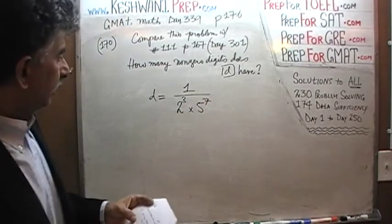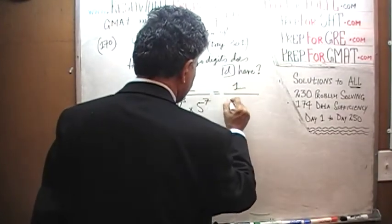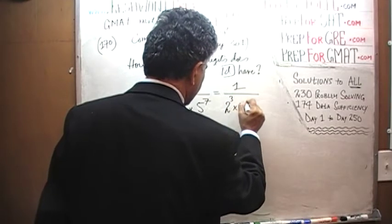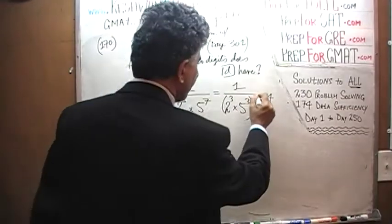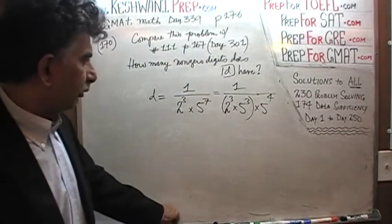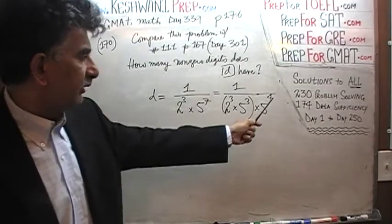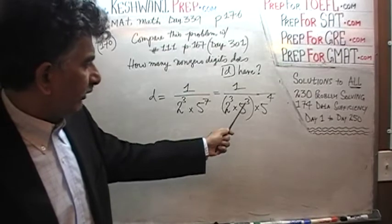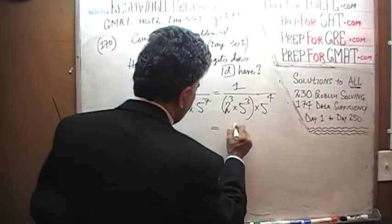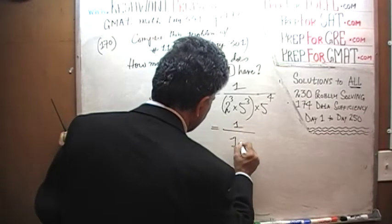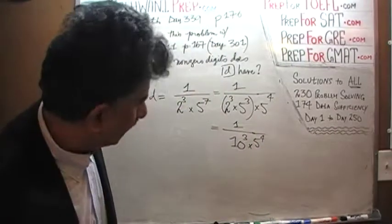So D = 1/(2³ × 5⁷), which can be rewritten as 1/(2³ × 5³ × 5⁴). We just break up the power 7 into 3 and 4 — since 3 plus 4 is 7. Now 2³ × 5³ can be written as 10³, so this becomes 1/(10³ × 5⁴).